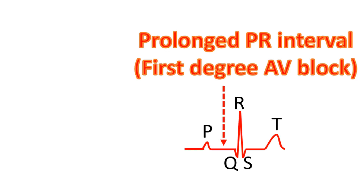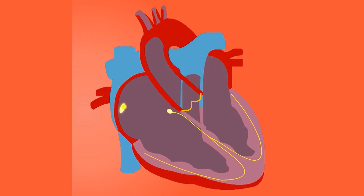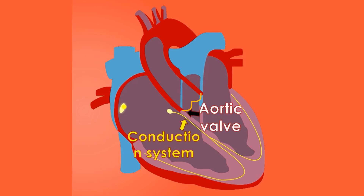First degree AV block usually does not need any treatment by itself, though there can be associated conditions which need treatment. Close observation is needed if first degree AV block is associated with other conditions, as it can progress to complete heart block. First degree AV block in older persons due to degeneration of the conduction system or aortic valve can also progress. In a very rare instance, infection of the aortic valve causing first degree AV block can progress rapidly to complete heart block and need early surgery, as the aortic valve is situated very near the conduction system of the heart.